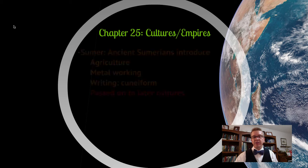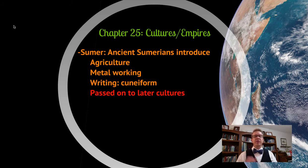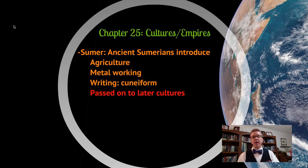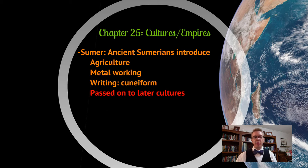Cultures and empires in chapter 25: we look at the ancient Sumerians in Sumer — that's where Gilgamesh was from. They introduced agriculture in the Fertile Crescent and metalworking, using iron and copper first, then bronze, then iron later. They also invented writing and cuneiform, which they passed on to later cultures. The things they invented were important because they got passed on.